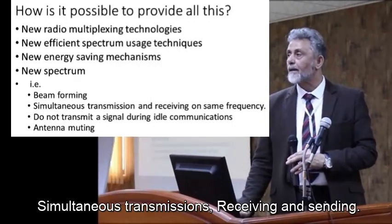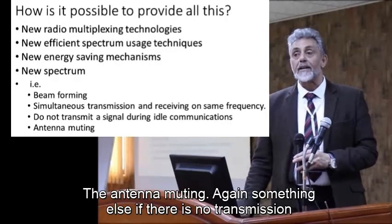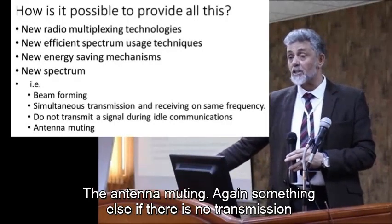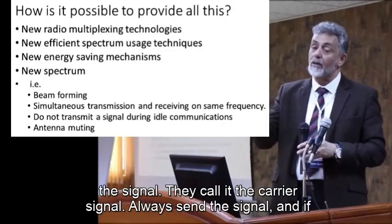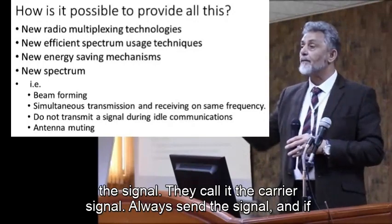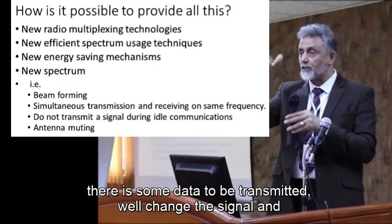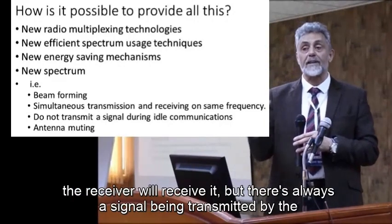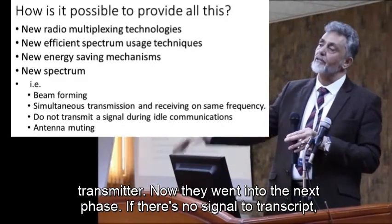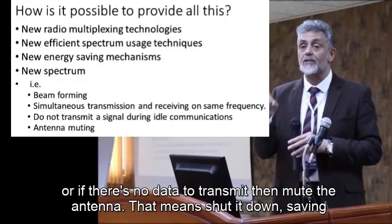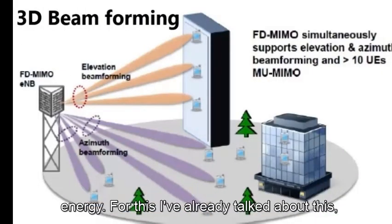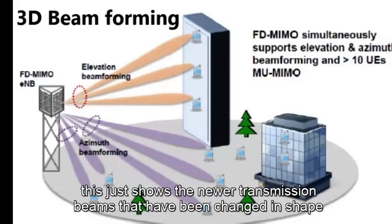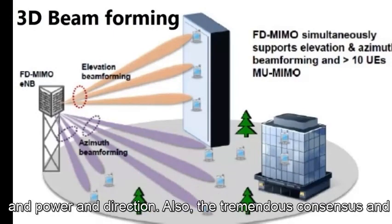Antennas can now handle simultaneous transmitting and receiving. Additionally, antenna muting has been introduced: if there's no data to transmit, the antenna is switched off to save energy. In the past, transmitters always sent a carrier signal continuously, but now when there's no data, the antenna is simply muted. Newer transmission beams have also been improved in shape, power, and direction.